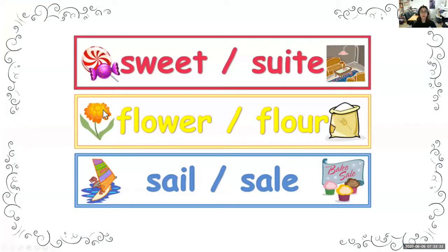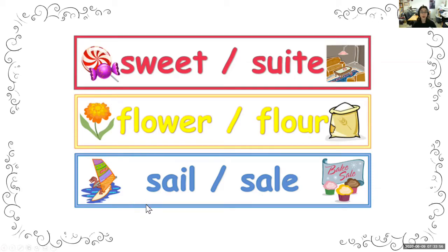Here are some examples of homophones. Sweet and suite — they sound the same but mean two totally different things. Candy can be sweet, whereas a suite is a room in a hotel. Another example is flour and flower — a flower like a marigold, versus flour which you use to bake bread or cakes.